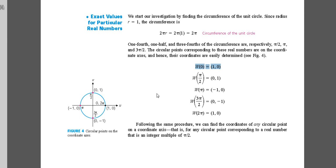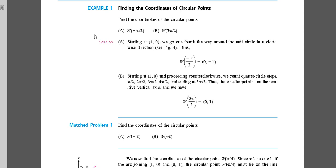For example: w(0) = (1, 0); w(π/2) — which is 90 degrees — gives (0, 1); w(π) gives (−1, 0); and w(3π/2) gives (0, −1), just like 1, i, −1, −i in the complex numbers. Following the same procedure we can find coordinates for any circular point corresponding to a real number that is an integer multiple of π/2. For instance, w(−π/2) = (0, −1) and w(5π/2) = (0, 1), the same as w(π/2).